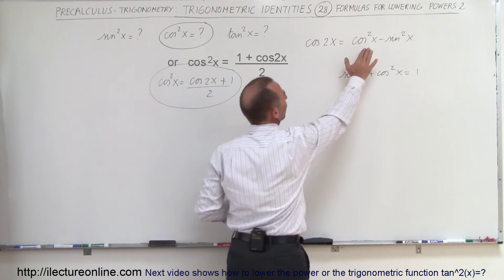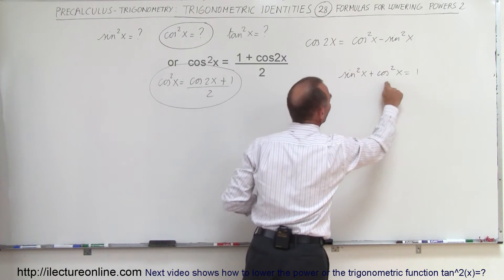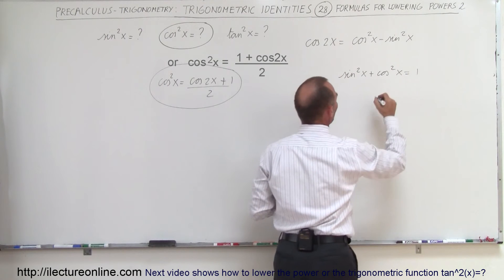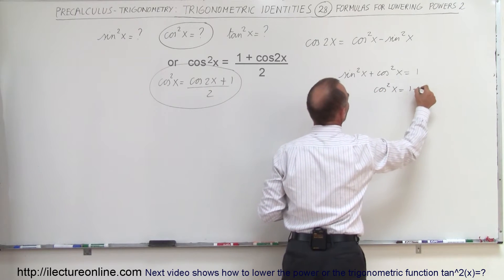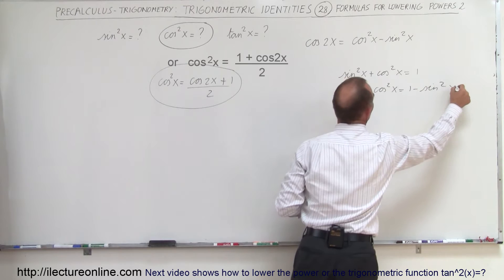Now we have to get rid of the cosine square of x. We're going to use this equation, so we can write that the cosine square of x equals 1 minus the sine square of x.